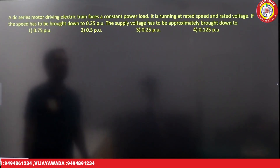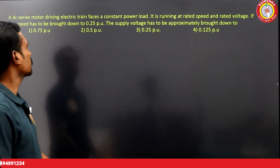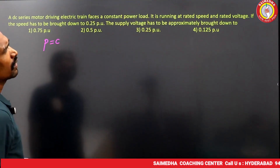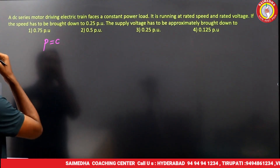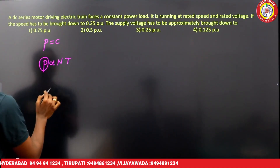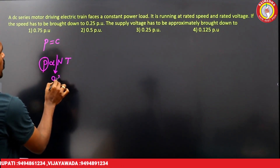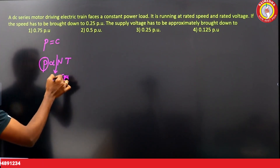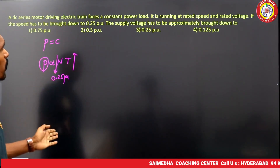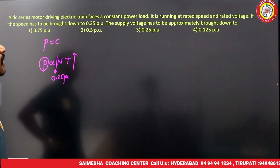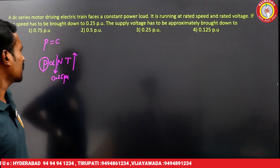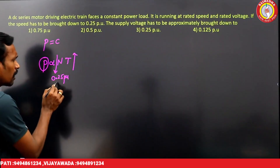Final question: a DC series motor drives an electric train at constant power. If the speed is brought down to 0.25 per unit (reduced by 75%), what must happen to voltage? Power = speed × torque. If speed reduces to 1/4, torque must increase by 4 times to keep power constant.